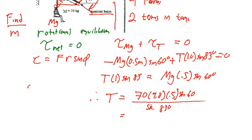So I'll get my calculator out. 70 times 9.8 times 0.5 times 60 sine divided by 83 sine. And that gives me 299 newtons. And that's going to be the tension in the cable.